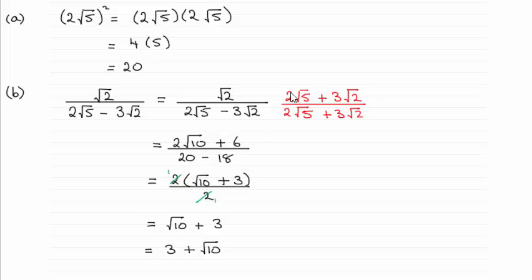Multiplying √2 with the top gives me 2√10 when you do √2 times 2√5, and then √2 times 3√2 gives me the 6, 3 times 2 being the 6 there. On the denominator here this is the difference of two squares.